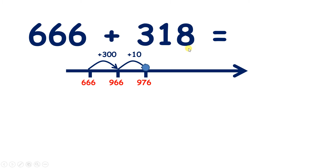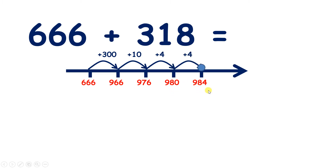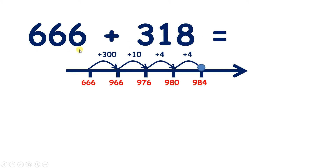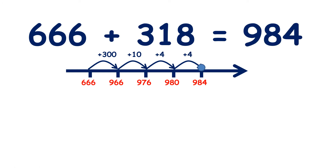So we need to add eight units. If we add four, that takes us to our next multiple of ten — nine hundred and eighty. And now if we add four more, we get to nine hundred and eighty-four. So we added four units to get to our next multiple of ten, then we added four more, so that we've added eight units altogether. So six hundred and sixty-six plus three hundred and eighteen equals nine hundred and eighty-four.